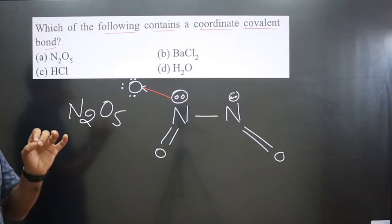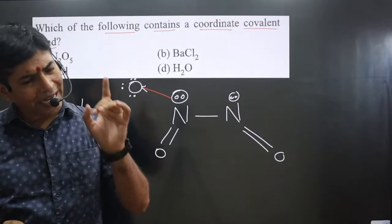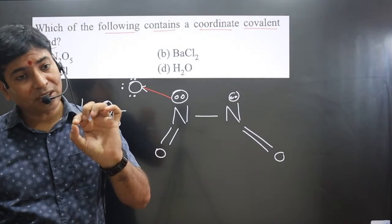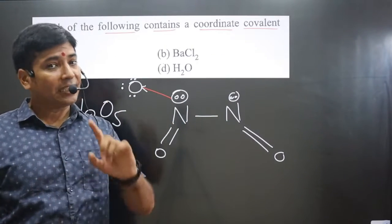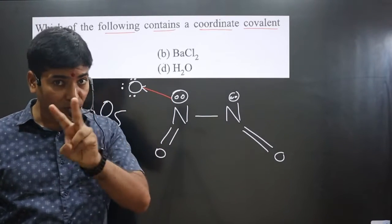Keep in mind, coordinate bond is also a special type of covalent bond, but in this case, the sharing of electrons is done only from one atom to another atom. Both atoms will not share electrons.